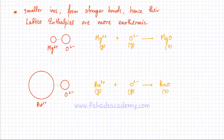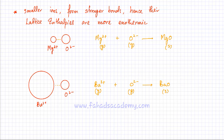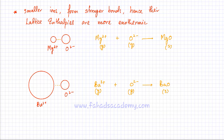When talking about lattice enthalpies, smaller ions form stronger bonds because they are closer together and have higher charge densities, hence their lattice enthalpies are more exothermic. For example, comparing two equations: magnesium and oxygen gaseous ions combining to form MgO, versus barium and oxygen gaseous ions combining to form BaO. Magnesium and barium are in the same group, but magnesium is a much smaller ion compared to barium.